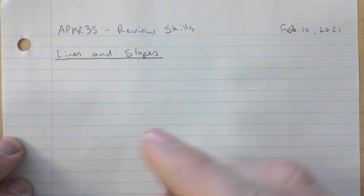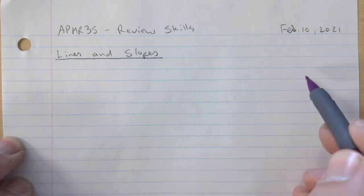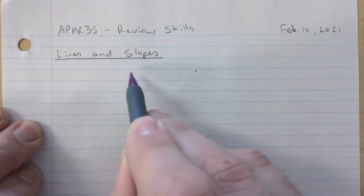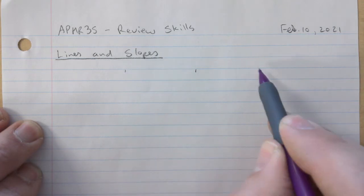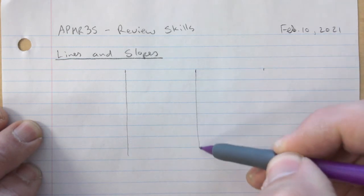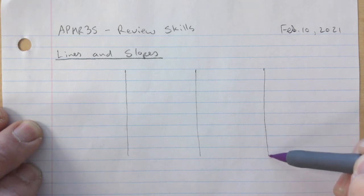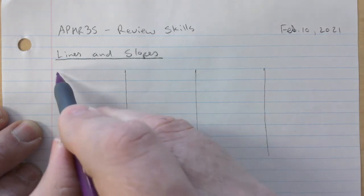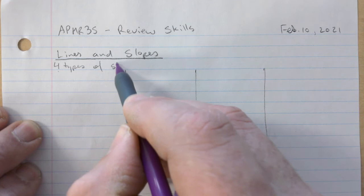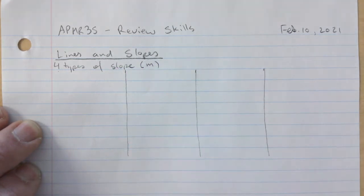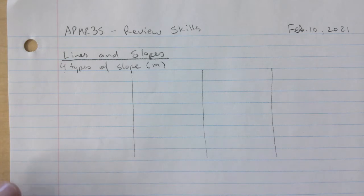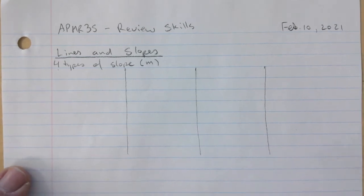So you have four types of slope. And I don't know if you recall, the letter M was used for slope, which doesn't make sense — like why would they use M? Should they be using S or something? I don't know, that's just how it is, we go with the flow.